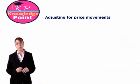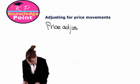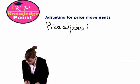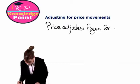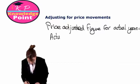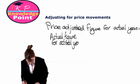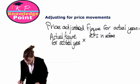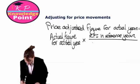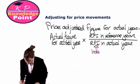What we call this is adjusting for price movements. If we want to calculate the price-adjusted figure for a year, it's a straightforward calculation. It will be our actual figure for the actual year, multiplied by the RPI, or the index, in our reference year, and divided by our RPI, or our index, in the actual year. When I say RPI, what I'm really referring to here is our index.